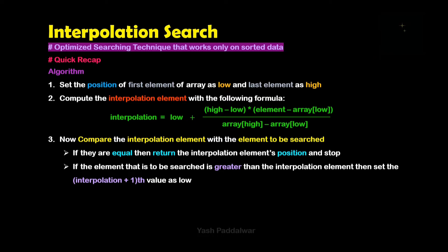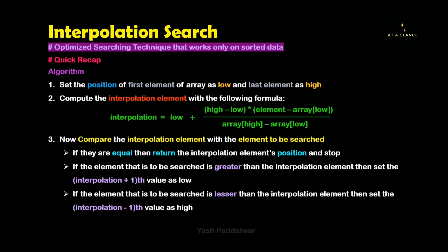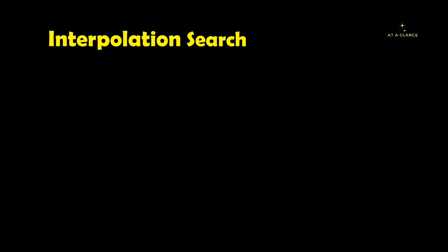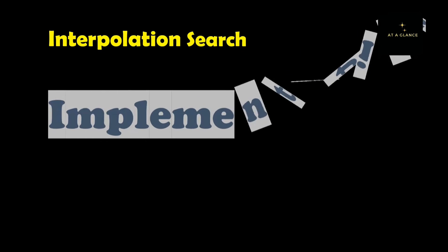If the element to be searched is greater than the element at the interpolation position, we set low as interpolation plus 1. In the other case, if the element to be searched is lesser than the element at the interpolation position, we set high as interpolation minus 1. Finally, we find the location of the element to be searched.